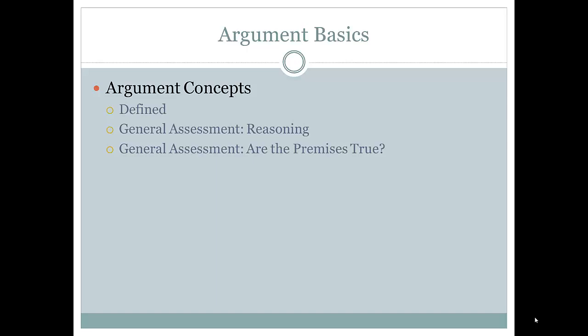An argument is valid means that if the premises were true, then the conclusion must be true. Interestingly, an argument could be valid yet have premises that are not true. It could even have a conclusion that's not true, provided the premises are all not true. The only thing you couldn't have would be an argument that's valid with all true premises and a false conclusion. We can reason well about things that are not true.